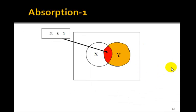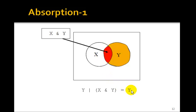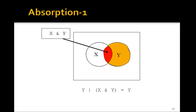Let's look at absorption. The red area is x AND y. What happens if we OR that with y — that is, OR it with all of y? We just get y. Since x AND y is already inside of y, ORing it just gives y. So this gets absorbed — we call it absorption. We just end up with y.